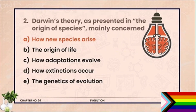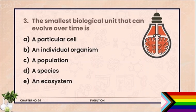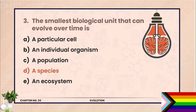MCQ 3. The smallest biological unit that can evolve over time is — (A) a species, (B) an ecosystem. The correct answer is a species. Ek species ke andar vakt guzarne ke saath change aata hai aur ek nai species ban jaati hai. The unit of evolution is considered as species.